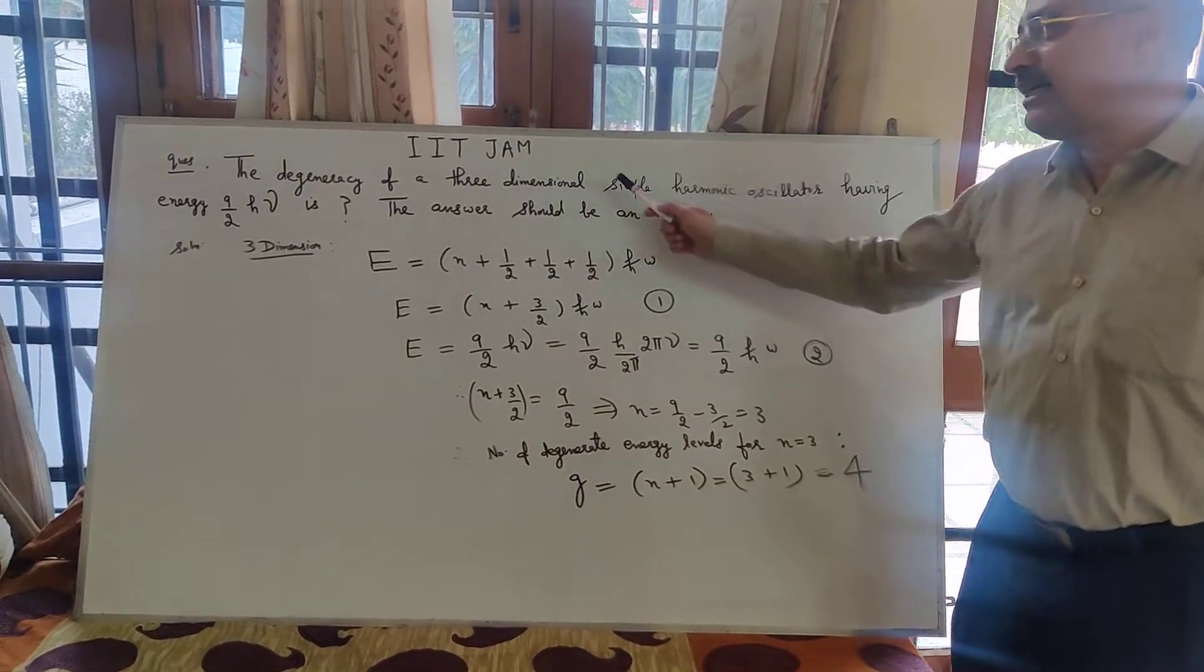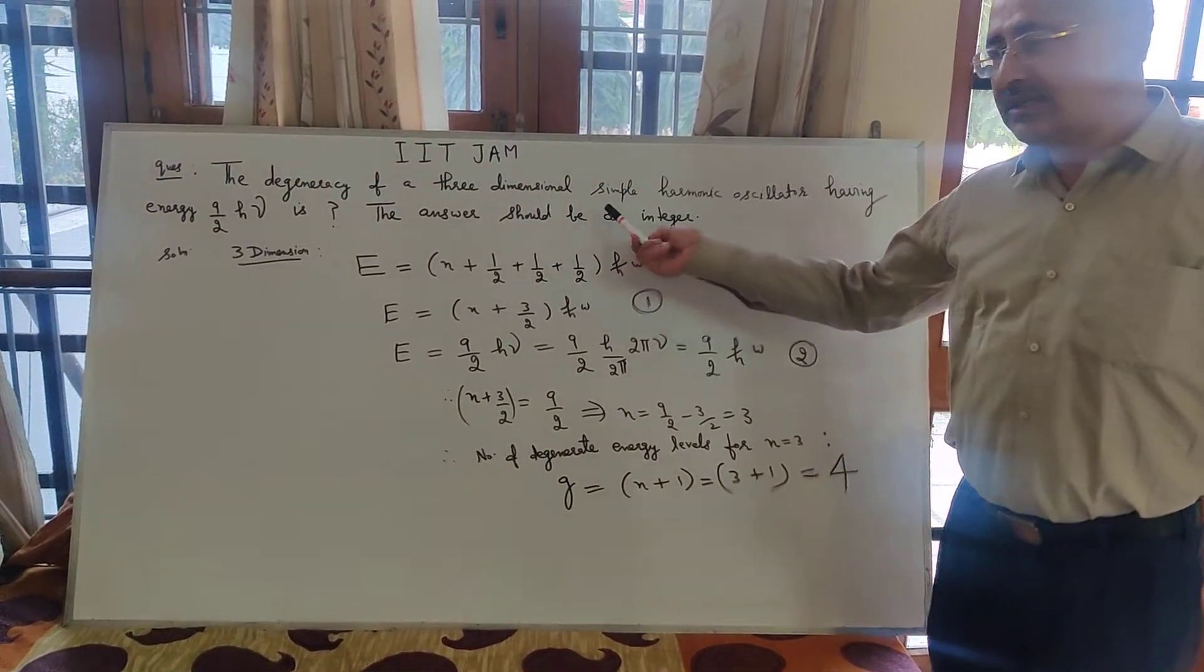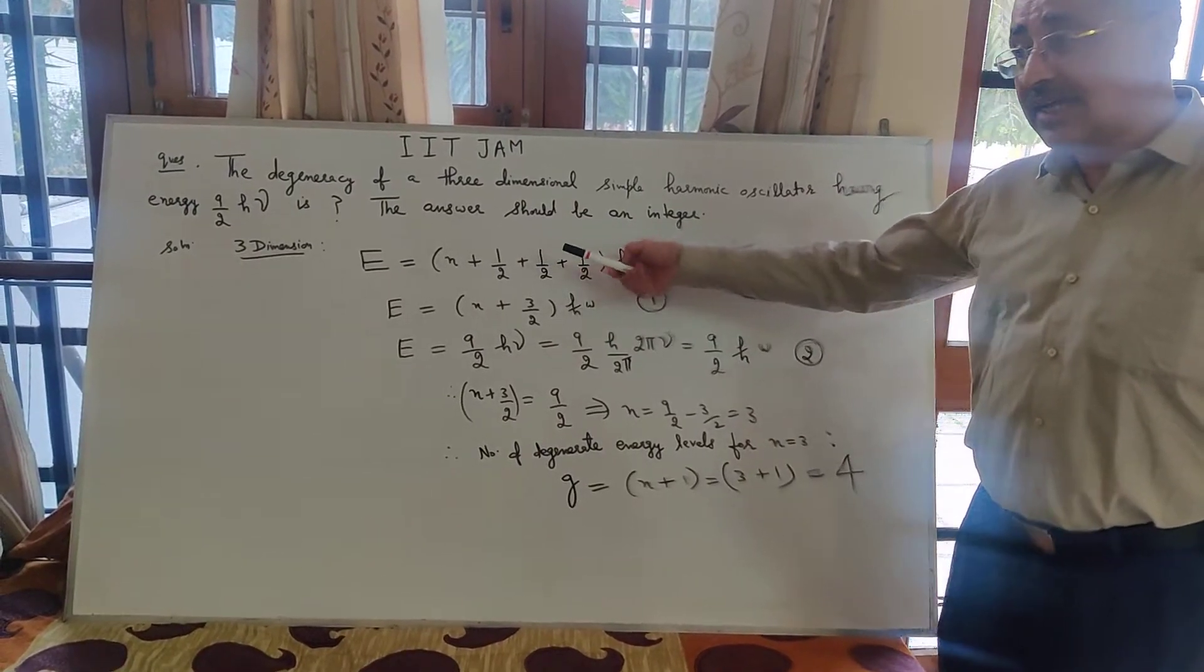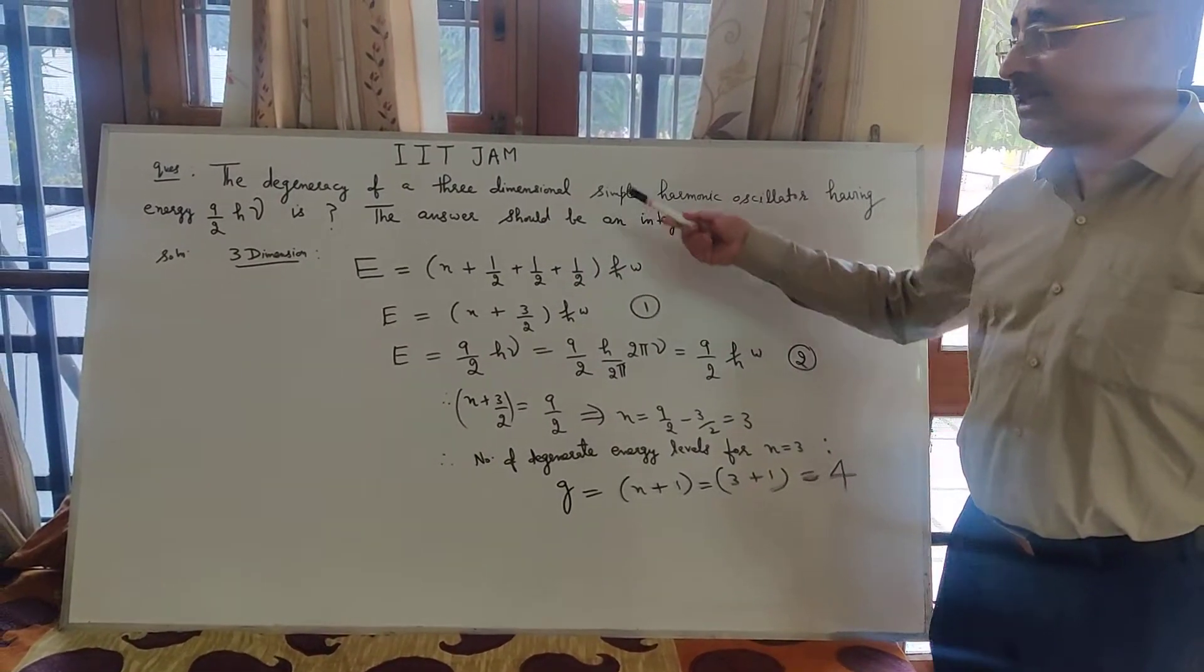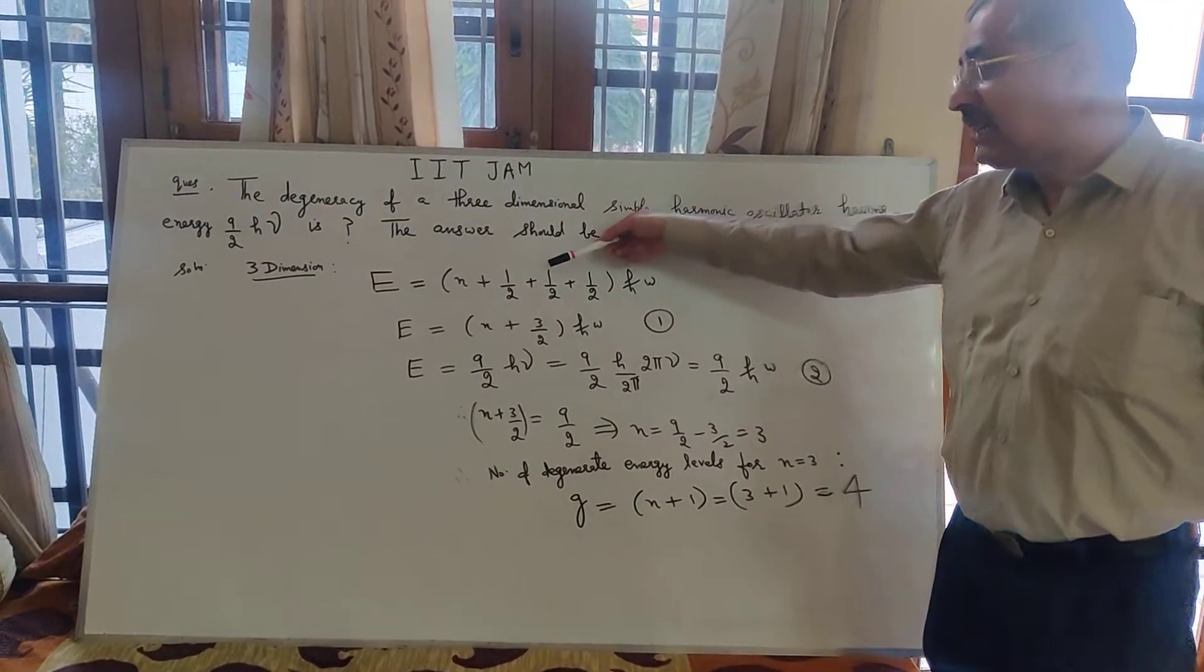Now see, the question mentions three-dimension. In one-dimension harmonic oscillator, we know the energy formula is n plus half into h bar omega. But this is three-dimension, so we have to add half three times.